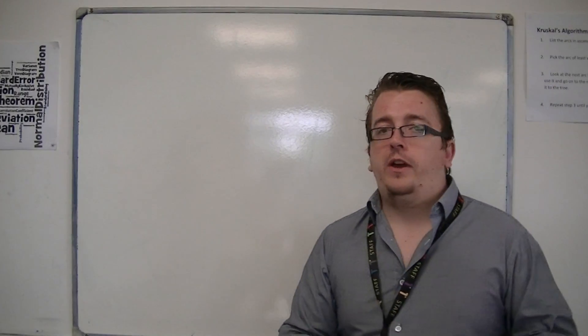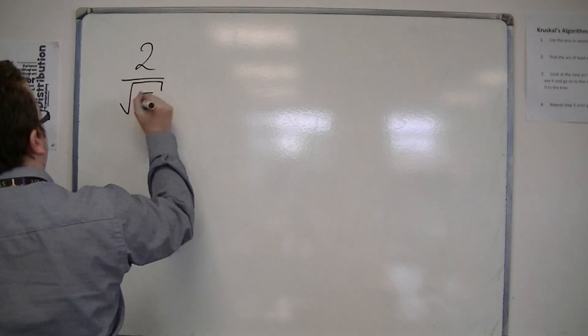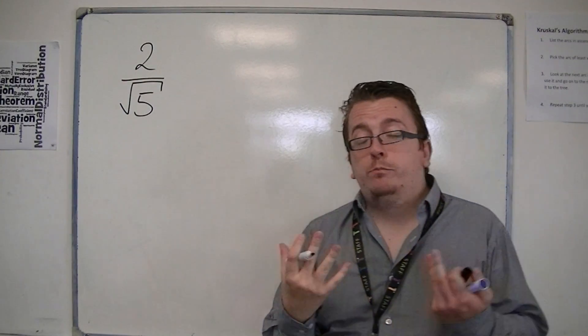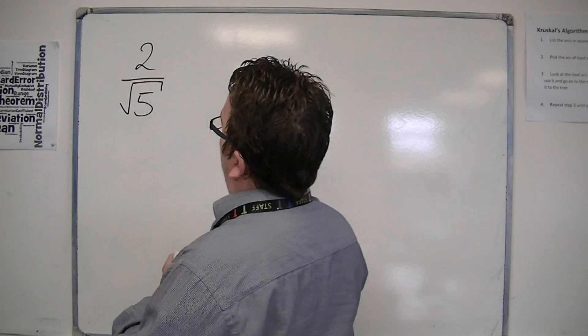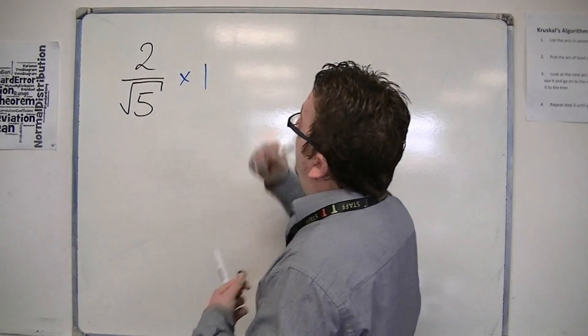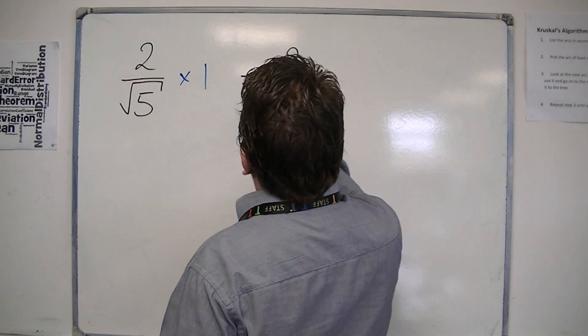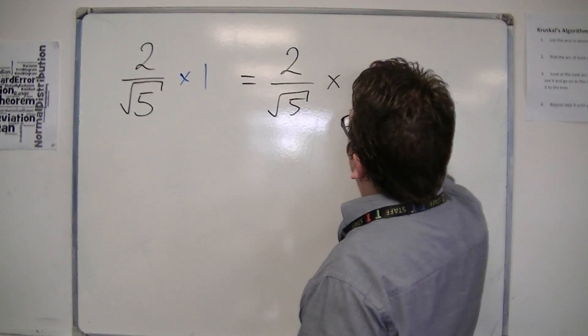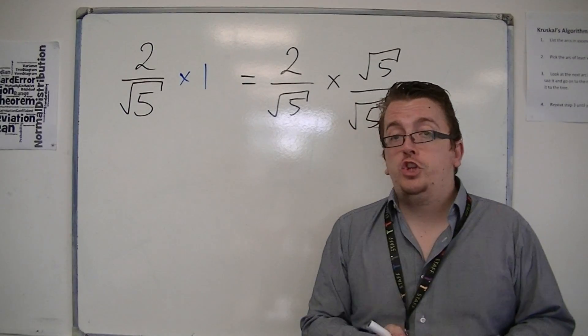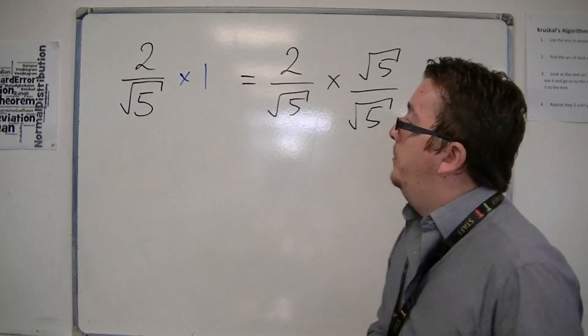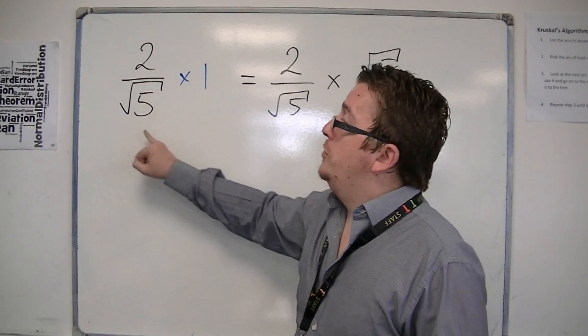Let's say we've got something like 2 over root 5. And now I can perform the same trick. I multiply it by 1. And what happens is that I'm going to choose the 1 to be root 5 over root 5.